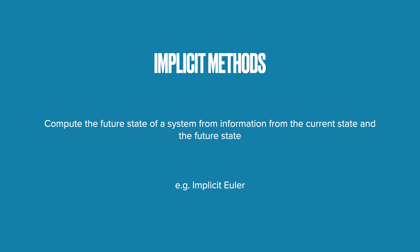In an implicit method, we compute the future state of a system from information from the current state and the future state. We have already looked into the implicit Euler scheme in one of our previous videos. The principal reason for using implicit solution methods is to allow for larger time step sizes. If the solution remains stable for arbitrarily large values of the time step, the method is said to be unconditionally stable. Keep in mind, stability does not mean accuracy — stability means the solution does not blow up. Moreover, if the method is also able to get rid of spurious high frequencies, the method is called numerically dissipative.